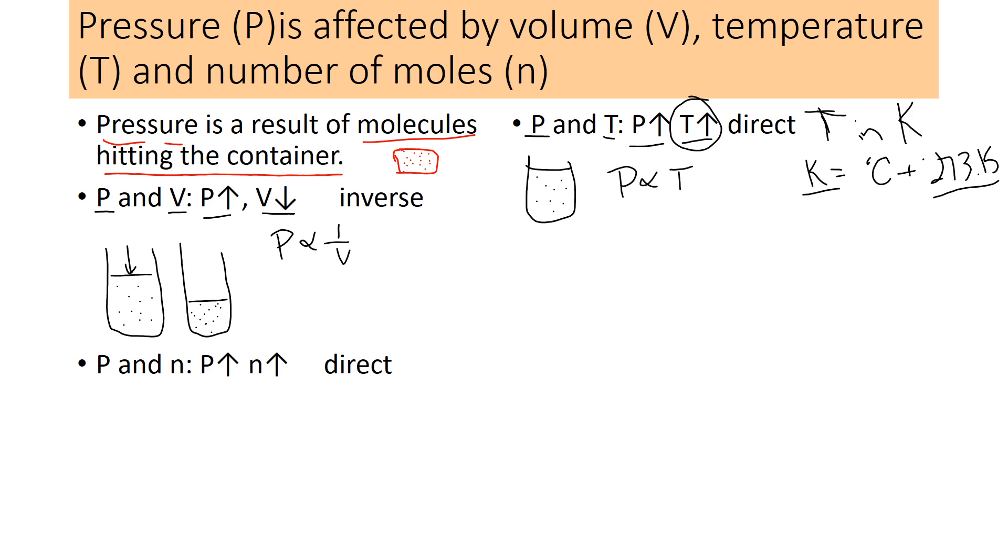Let's look at how pressure is affected by the number of moles that we'll abbreviate as n. So little n is the number of moles. Again, visualize a container of gas molecules. Now if I increase n, what happens is I just put more particles in there. So if I have more particles, they're going to hit the sides more often. So as n increases, P also increases. So again, it's direct. Pressure is proportional to the number of moles.